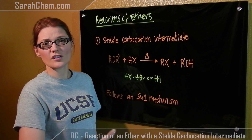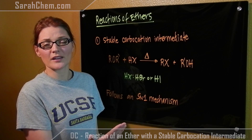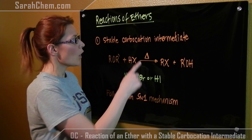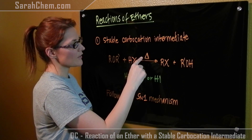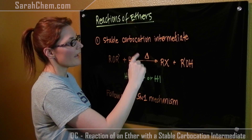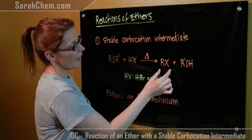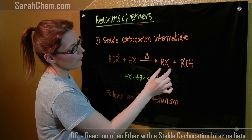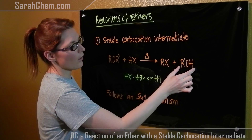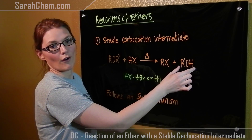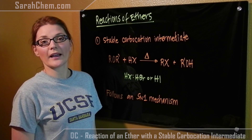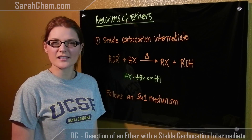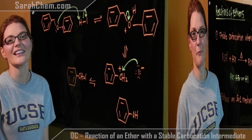Additionally, because of the slow startup that ethers have, we will have to incorporate heat in this reaction. At the end of it, we'll get an alcohol halide and we'll also get an alcohol group. So this is going to follow an SN1 mechanism, so let's take a look at it.